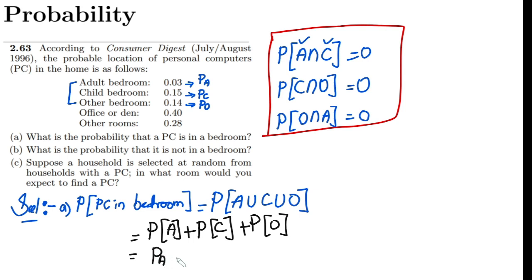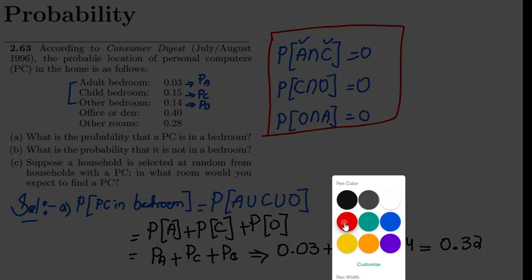I have previously shown you guys that this probability is P_A plus P_C plus P_O. Putting their values, what I will get? I will get here 0.03 plus 0.15 plus 0.14. Adding them, I will get 0.15, 0.14 that is 0.29, and 0.03 that would be 0.32. So that is the answer of part (a).